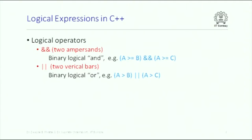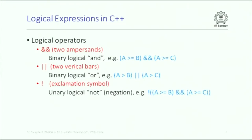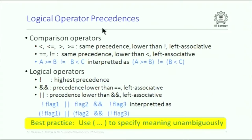OR is represented by two vertical bars (||) and you can have expressions with OR. The truth table for OR is well known. One single exclamation mark (!) is negation — not of true is false, not of false is true — and logical NOT can be put on an entire expression. The precedence order: comparison operators have the same precedence, lower than exclamation mark, and are left-associative.